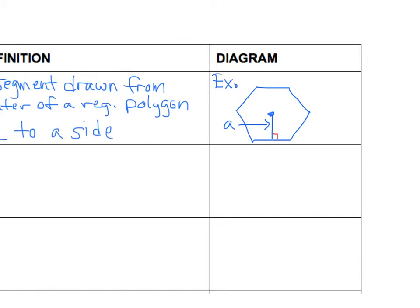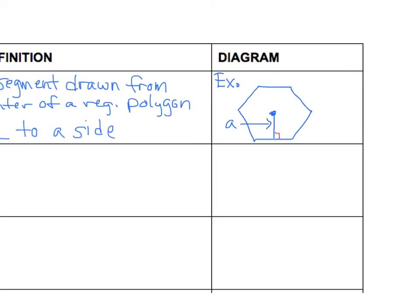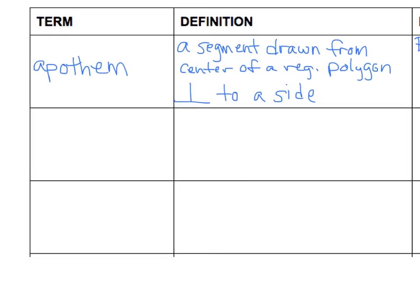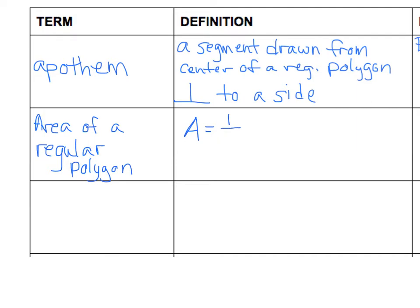That's a really important segment to discuss because it is used when we talk about the area formula for a regular polygon. Capital A stands for area, and it is always calculated by one-half capital P times little a. Little a is the apothem we just talked about, and P stands for perimeter.